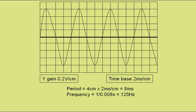If there are a large number of waves on the screen, it would be more accurate to find the time taken for several waves, and then divide by the number of waves. For example, we could take the trace from here to here, which covers 3 complete waves.